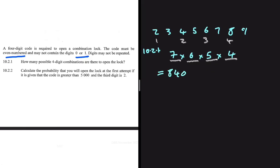That gives us 7 × 6 × 5 × 4 = 840 possible four-digit combinations. Now let's look at the next question: calculate the probability that you will open the lock at the first attempt, given that the code is greater than 5000 and the third digit is two.